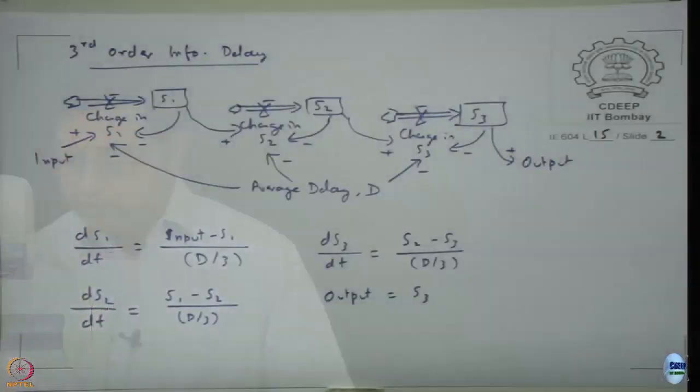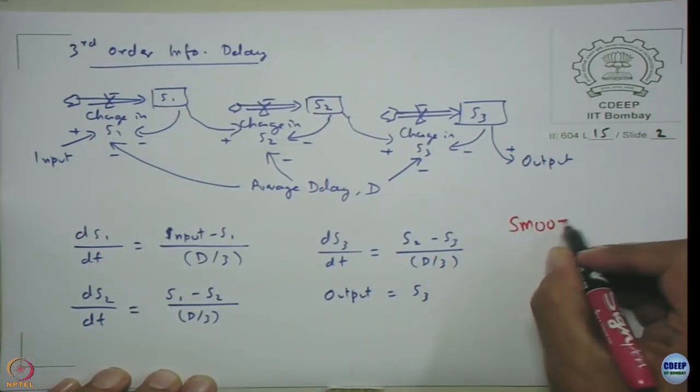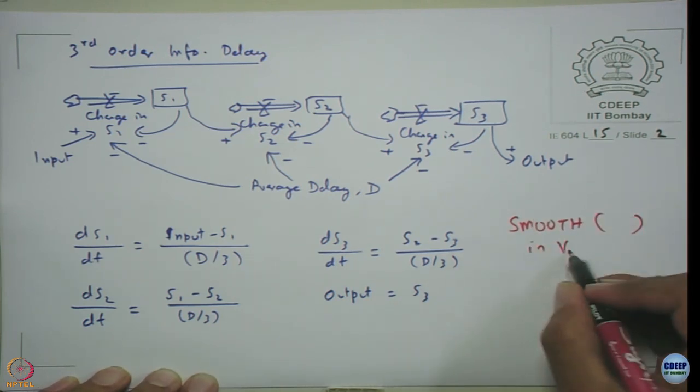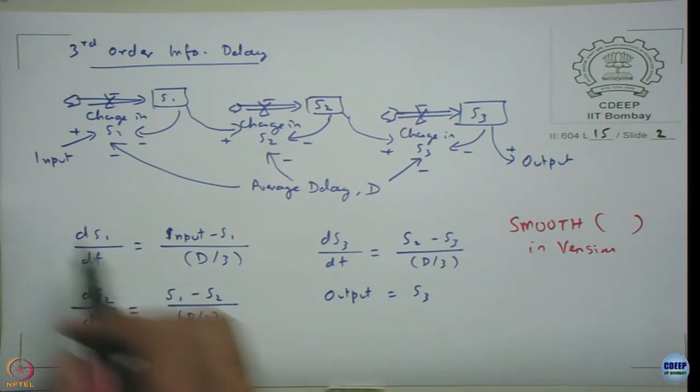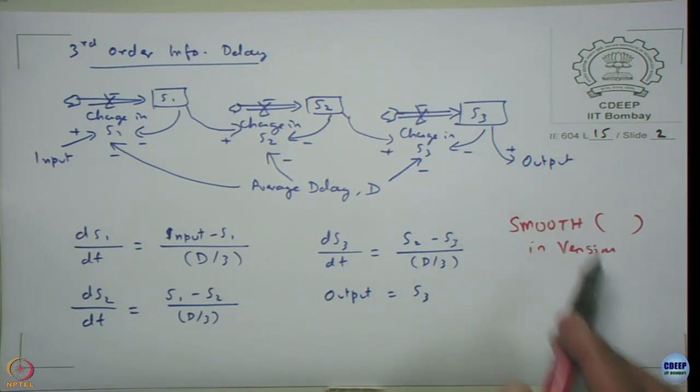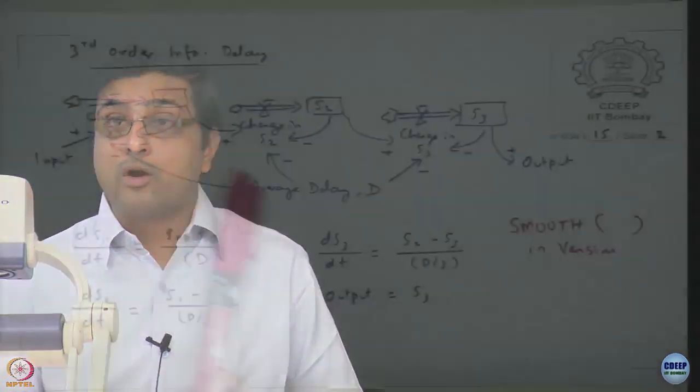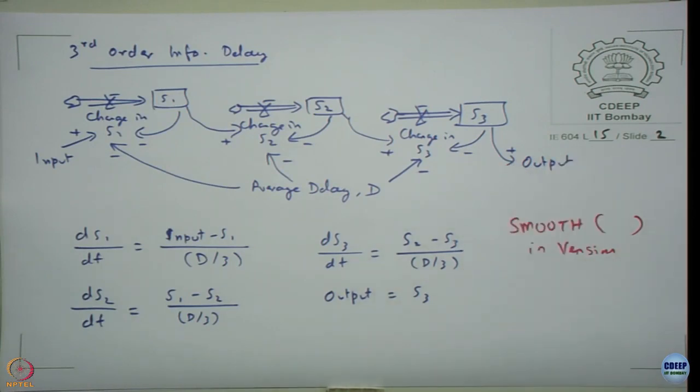Just like we had the delay function in Vensim to model these in shortcut, Vensim has something called a smooth function. In this smooth function, you can directly connect the input to the output and do the average delay. It will smooth the input output based on the order of the delay and give the value of the output. You can play with the examples already available in Vensim for the smooth function because as you can see, if you are going to model as a fifth-order delay, just making all these stocks itself is going to make your model so complicated. That is when the smooth function helps.